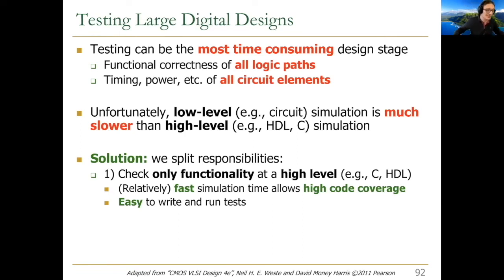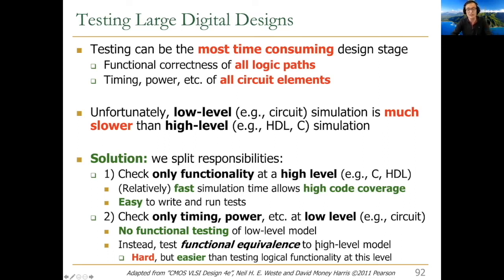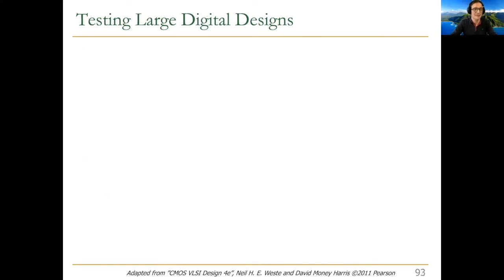We can easily write and run tests at that high level of abstraction because things are much faster. Whereas at the circuit level, things are much slower and more detailed modeling is required. We check only timing, power, etc., at a lower or circuit level — and we usually don't do functional testing of whether the circuit implements a function using a low-level model, but we test functional equivalence to the high-level model.